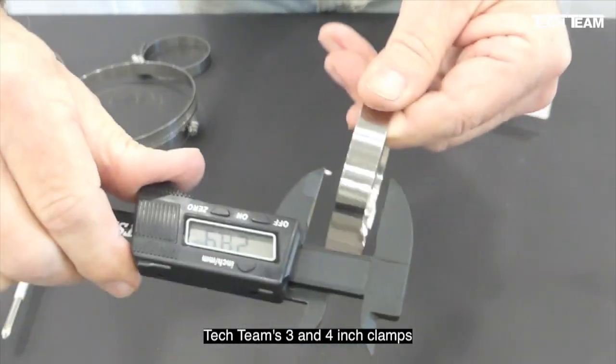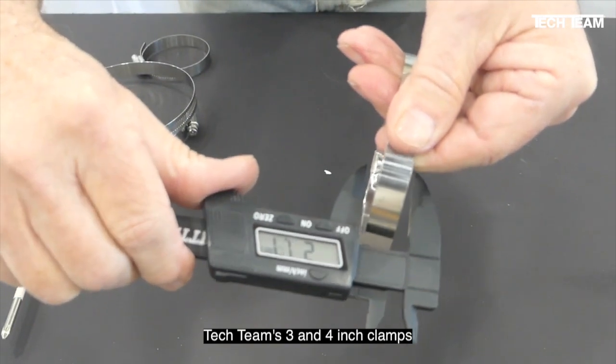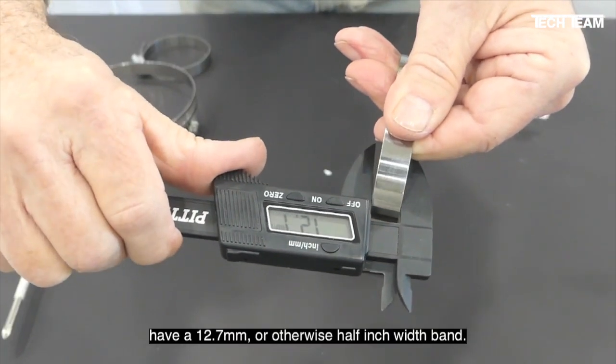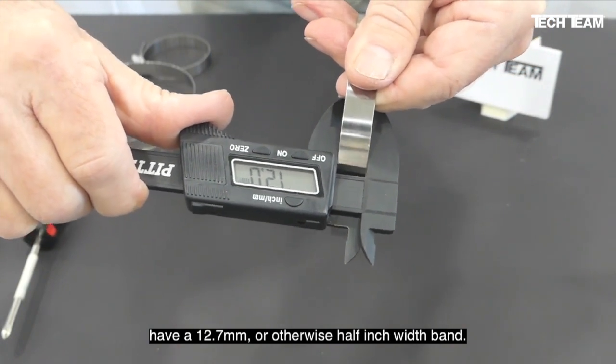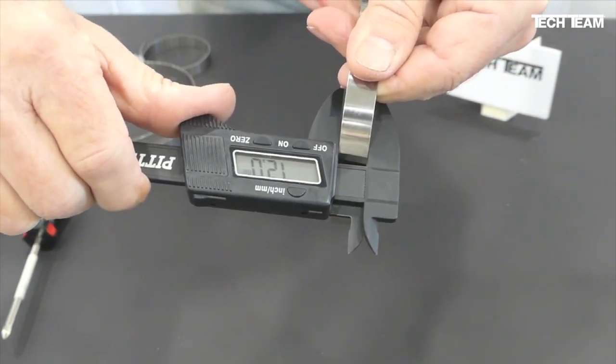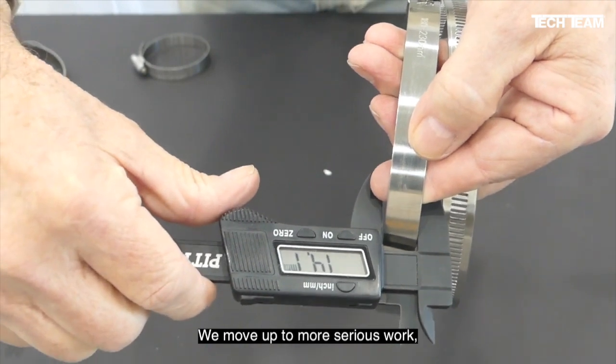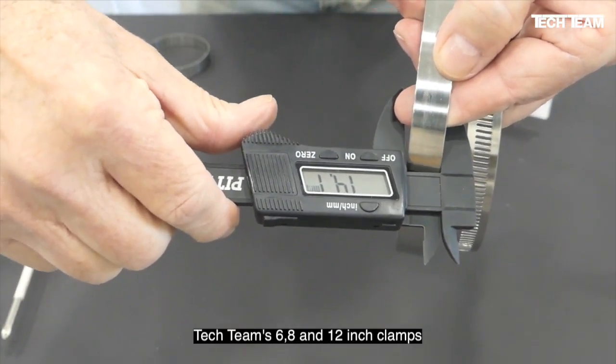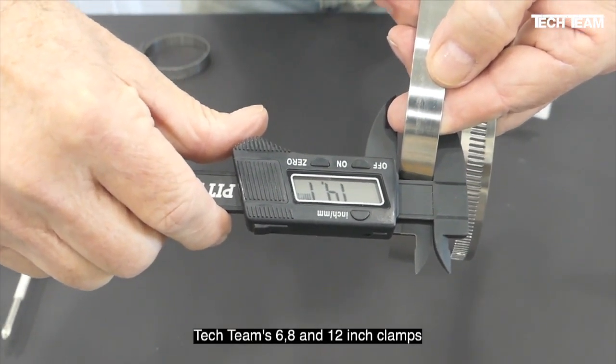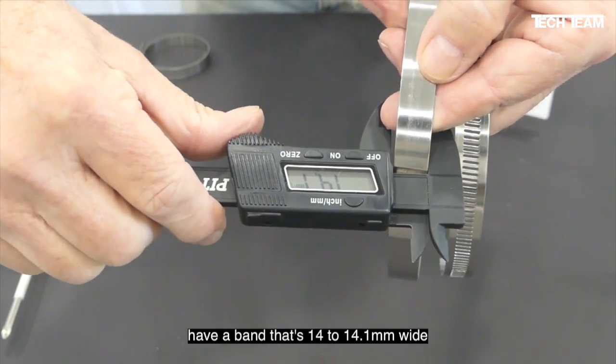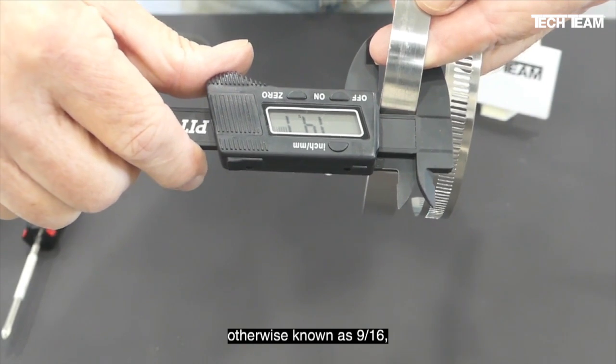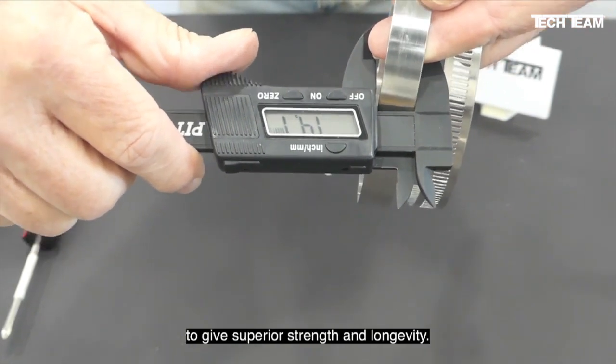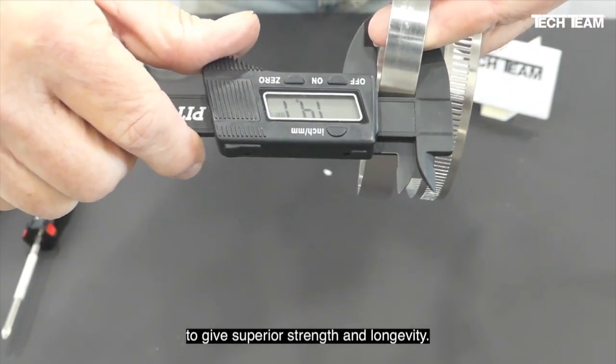Tech Team 3 and 4 inch clamps have a 12.7 millimeter width band. When we move up to more serious work, Tech Team's 6, 8, and 12 inch clamps have a band that's 14 to 14.1 millimeters wide, otherwise known as 9/16ths, to give superior strength and longevity.